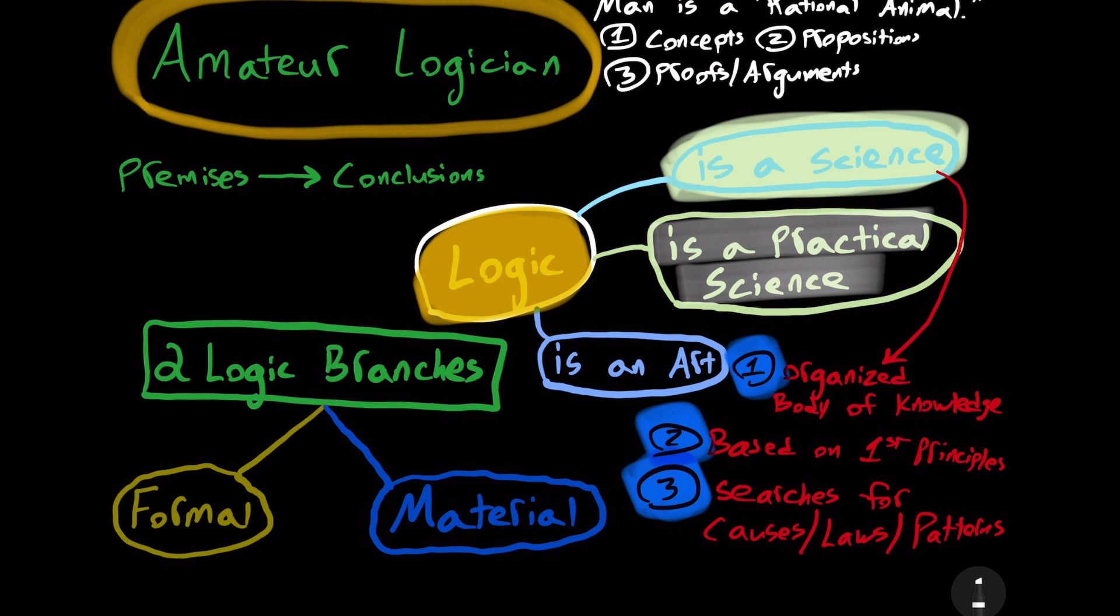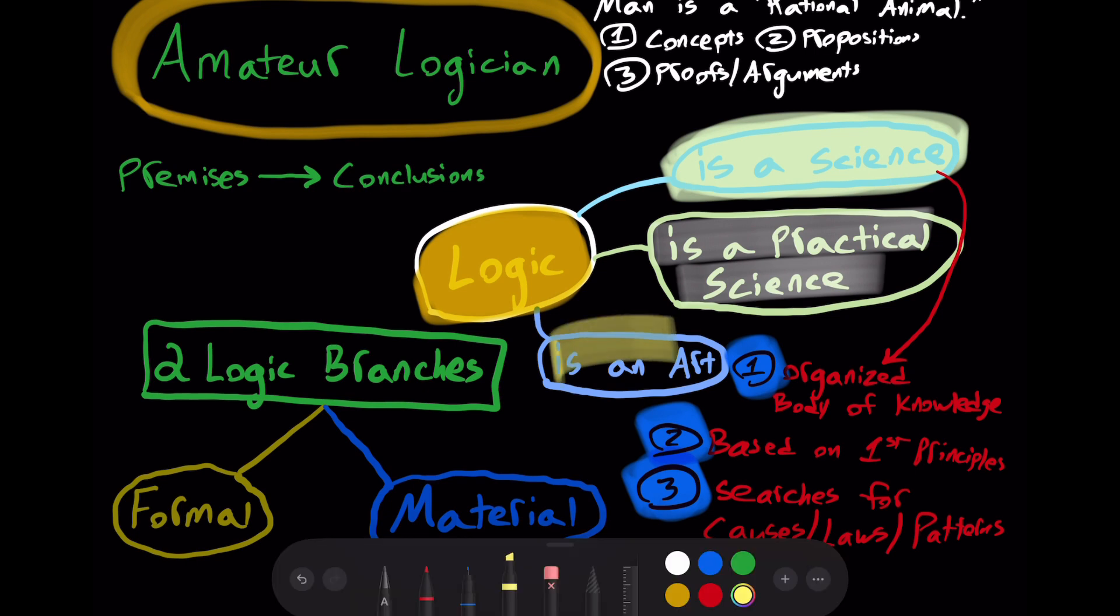Logic is a practical science. It helps us be logical. It allows us to reason better, to evaluate arguments of other people better. Logic is an art. That is, it's a practical science. Again, it's not just some game of arbitrary rules.